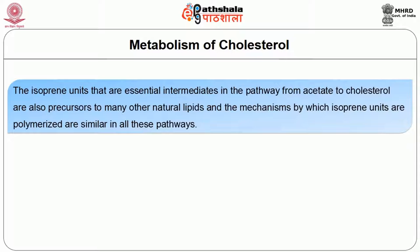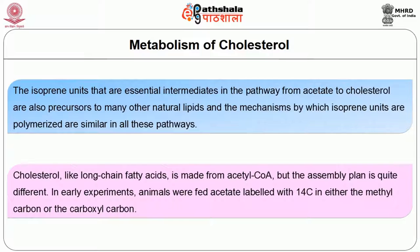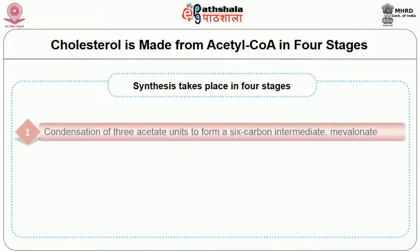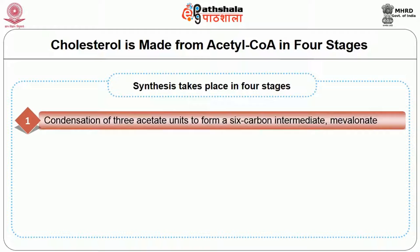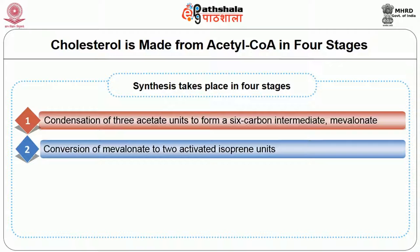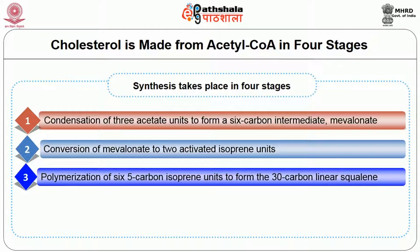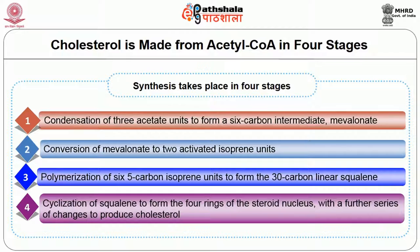Cholesterol is made from acetyl-CoA in four stages. Like long-chain fatty acids, cholesterol is made from acetyl-CoA, but the assembly is quite different. Synthesis takes place in four stages: first, condensation of three acetate units to form a six-carbon intermediate, mevalonate; second, conversion of mevalonate to activated isoprene units; third, polymerization of six five-carbon isoprene units to form the 30-carbon linear squalene; and fourth, cyclization of squalene to form the four rings of the steroid nucleus, with further changes including oxidation and removal or migration of methyl groups to produce cholesterol.